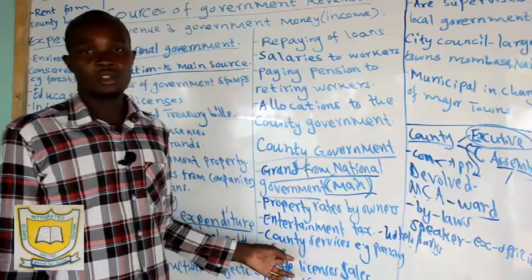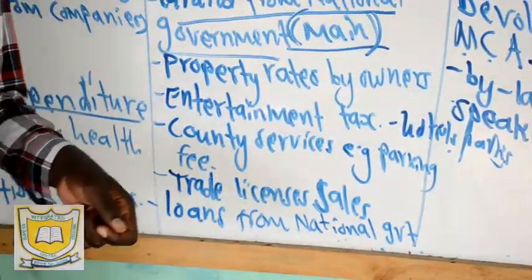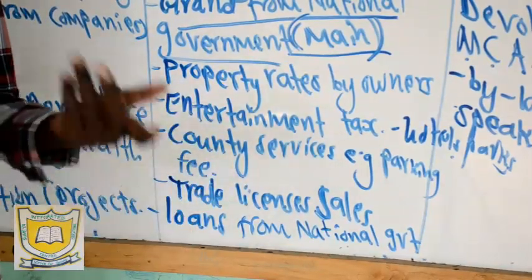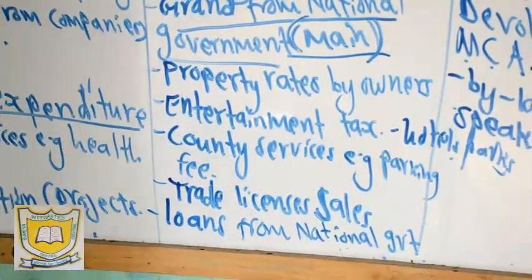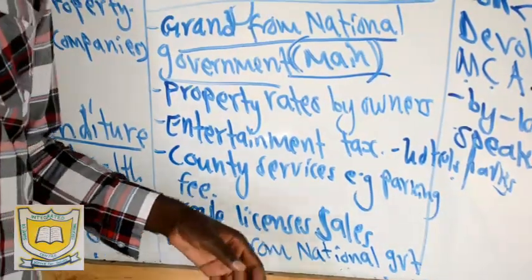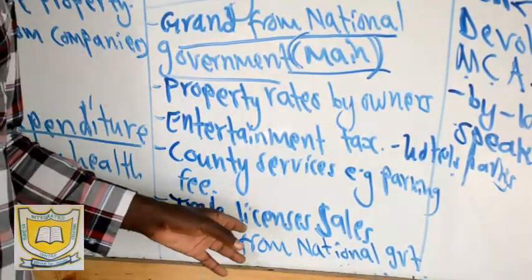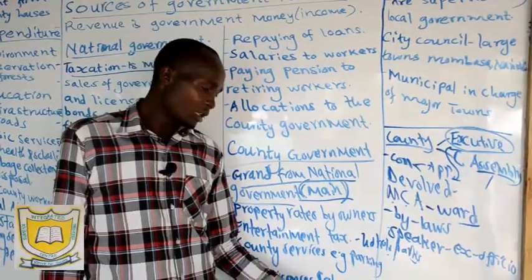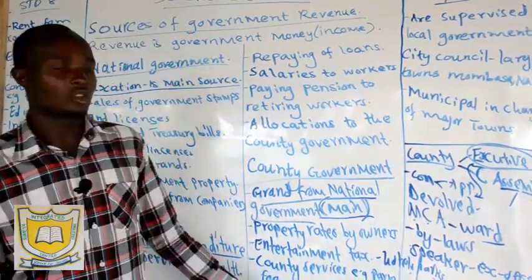Then we have county services — for example, parking fees. In the county, there are reserved parking areas where vehicles park and pay some money. Civil servants or any individual pays parking fees. Then we have trade licenses: people carrying out business in towns get trading licenses from the county government offices. They may pay, say, 30 to 50 shillings depending on the business. Finally, the county government can also take loans from the national government and return them later.